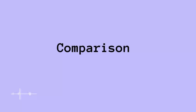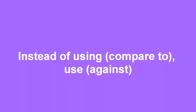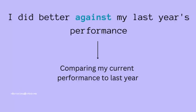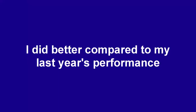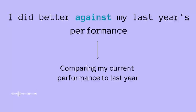Now let's move to the second usage: comparison. You can use 'against' to compare between things instead of using the word 'compare.' For example: 'I did better against my last year's performance' — meaning I'm comparing my current performance to last year's. Instead of saying 'compared to my last year's performance,' you can simply use 'against.'